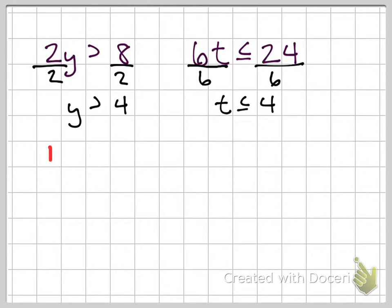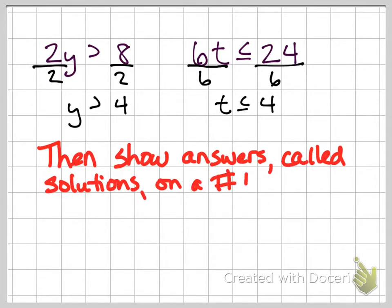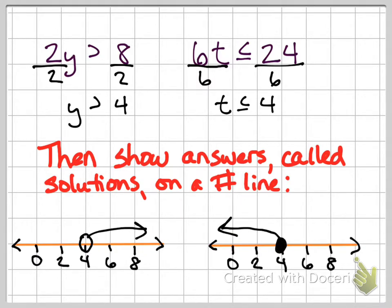Here are a couple of examples from sixth grade type inequalities. You have 2y is greater than 8. To solve for y, you divide each side by 2. That gives you y is greater than 4. On the second example, I have 6t is less than or equal to 24. To solve for t, divide by 6, you end up with t is less than or equal to 4.